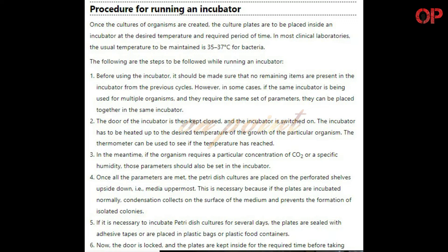Step 3: The incubator has to be heated up to the desired temperature for the growth of the particular organism. The thermometer can be used to see if the temperature has been reached. If the organism requires a particular concentration of CO2 or a specific humidity, those parameters should also be set in the incubator. Step 4: Once all the parameters are met, the petri dish cultures are placed on the perforated shelves upside-down, that is, media uppermost. This is necessary because if the plates are incubated normally, condensation collects on the surface of the medium and prevents the formation of isolated colonies.